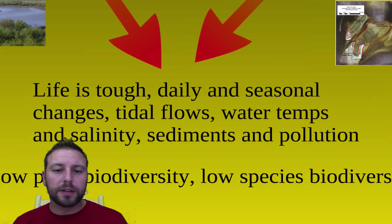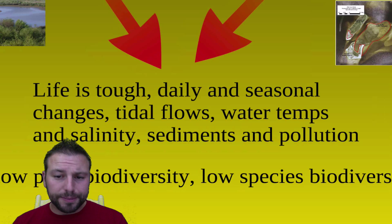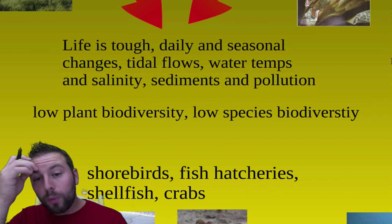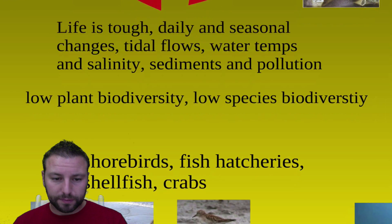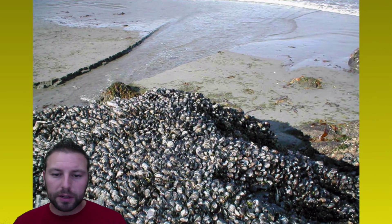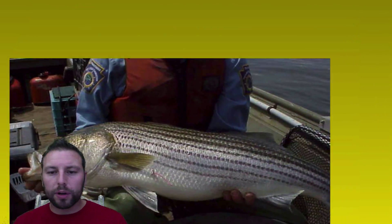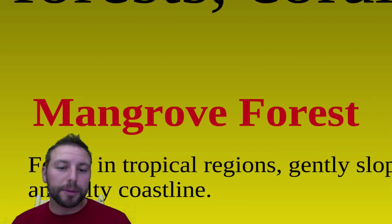In these intertidal regions, because there's a huge amount of tidal flow, there are daily, seasonal, and hourly changes. So these organisms have to be adapted to that. We see a low biodiversity of plants and animals due to these changing conditions. We see a number of different shorebirds, fish hatcheries, shellfish, and crabs, as well as organisms like striped bass and seabirds in the area.